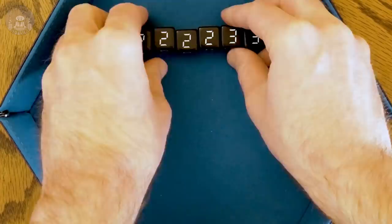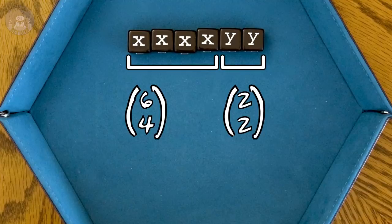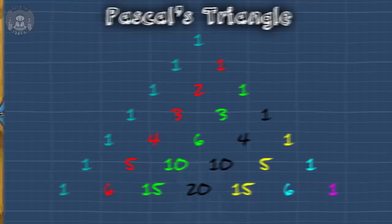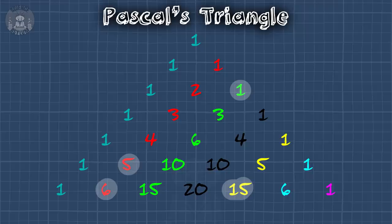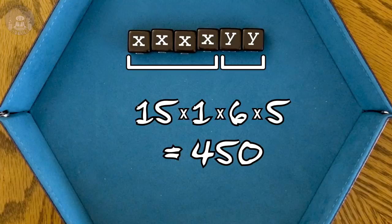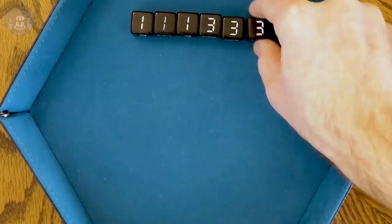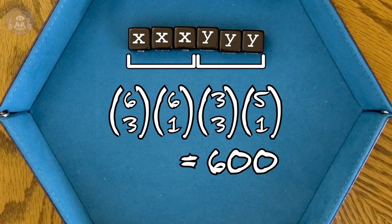How about rolling a four of a kind with a pair? That's a dice combo for the four of a kind, a dice combo for the pair, a number combo for the four of a kind, and a number combo for the pair. Next, we grab all the values we need from Pascal's triangle. Yep, all four of them are there. Then we get 15 times 1 times 6 times 5 equals 450. Okay, okay. Let's try something a little trickier. Like two triplets.